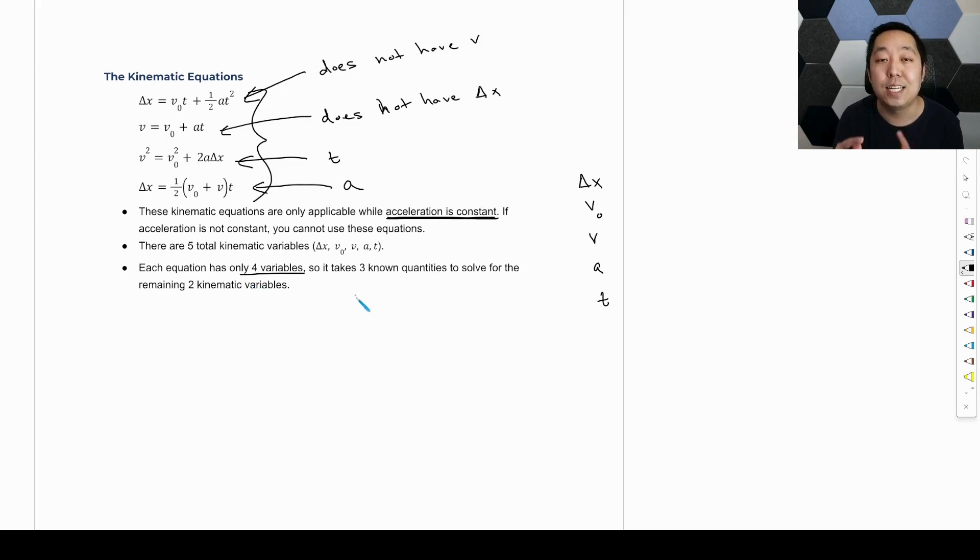So each equation has four variables. It takes three known quantities to solve for the remaining two kinematic variables. Because once you have the other one, you can solve for the other two using a combination of equations.